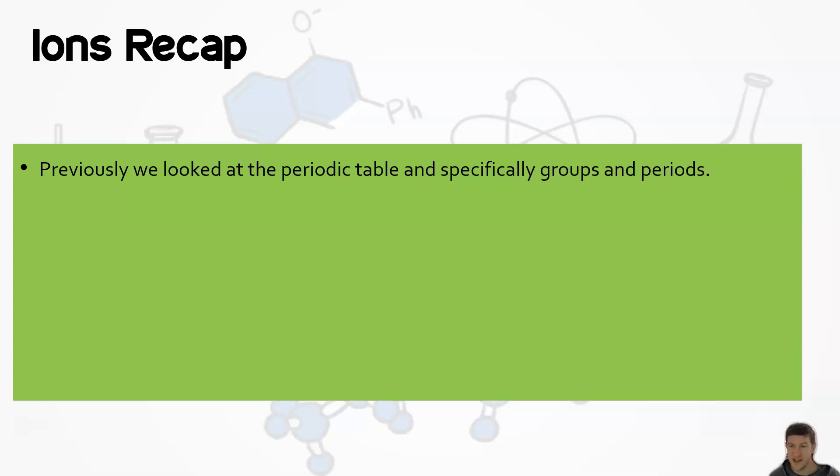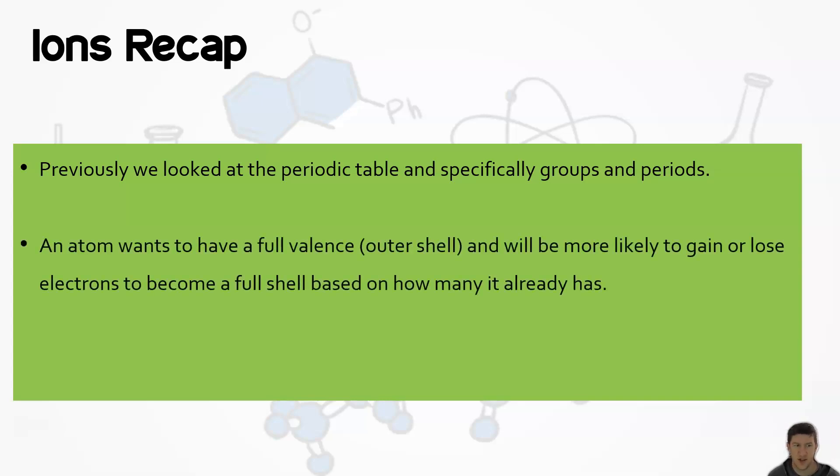To jog your memory, if an atom wants to have a full valence shell - remember valence is that outer shell, the last shell that it has - it's going to be more likely to gain or lose electrons to do that, depending on how many it already has. We talked about this.